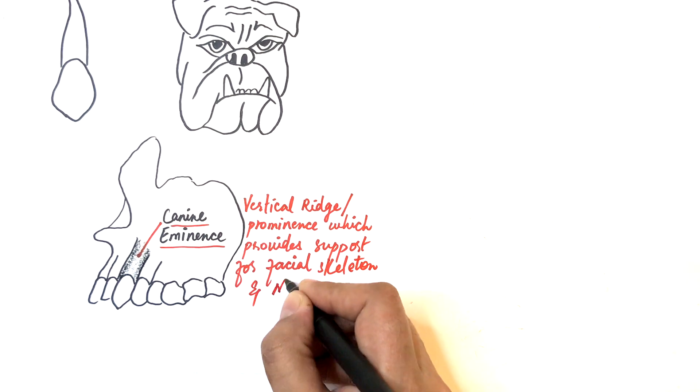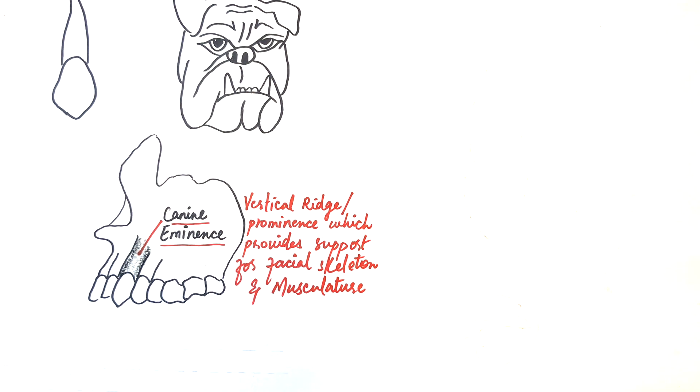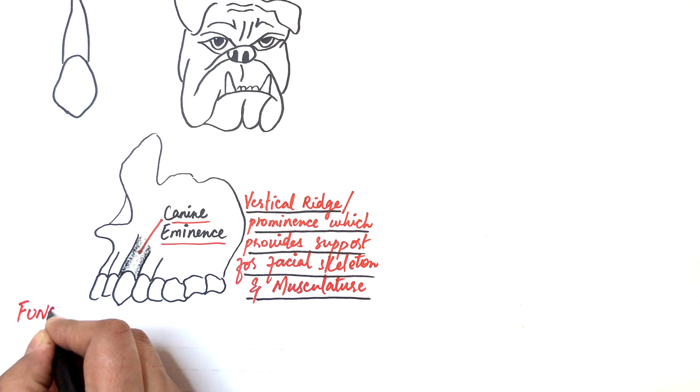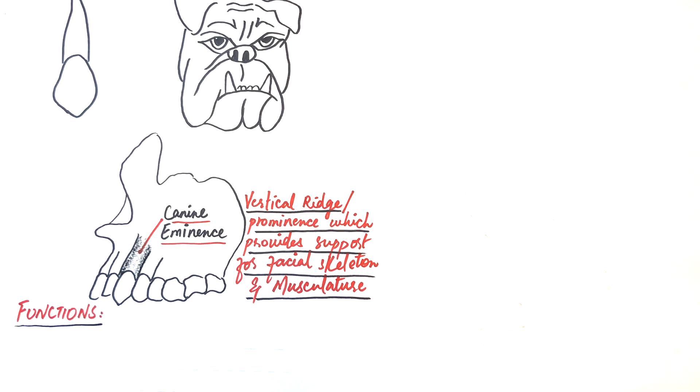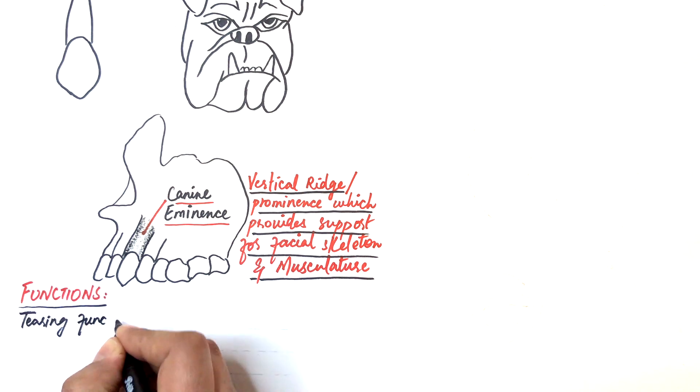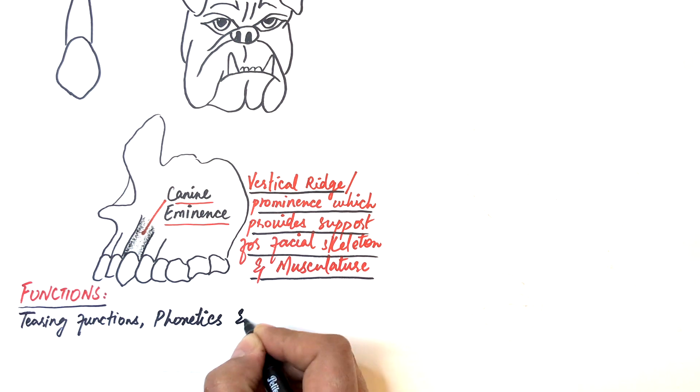Coming to their functions, the function of a canine tooth in mastication is intermediary to the incising function of incisors and grinding functions of premolars and molars. That is, they have tearing functions. They also play a role in phonetics and aesthetics as well.